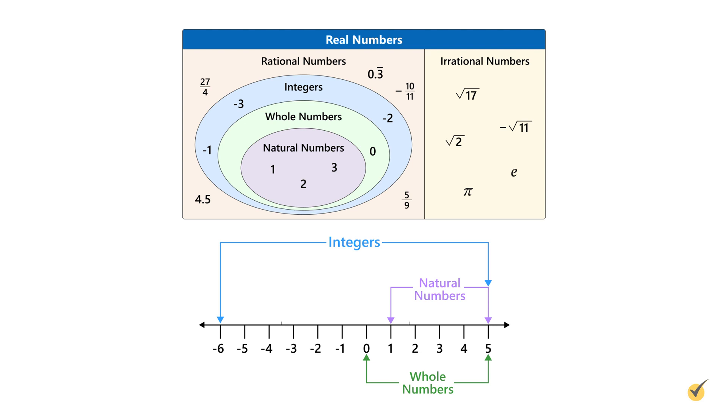Rational numbers include all the sets seen here in addition to some values in between. An easy way to remember this is that the word ratio is in the name of this classification. All numbers included in the rational number set can be written as a ratio of integers.